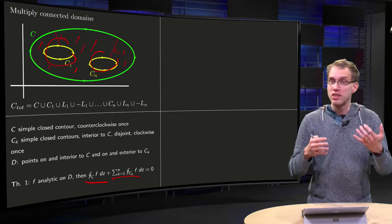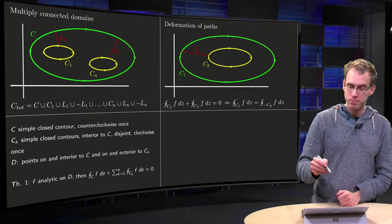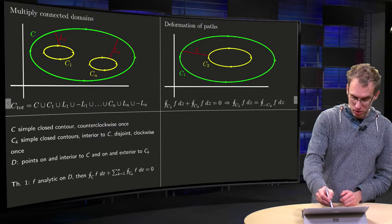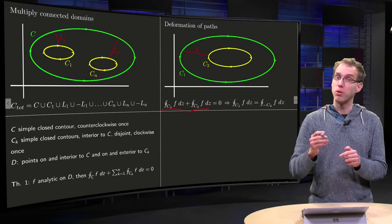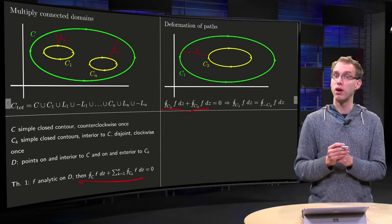So how does this help us? Well, if you have for example a domain with one hole, like we have over here, then you know that the integral along c1, going counterclockwise, plus the integral along c2, going clockwise, equals zero. That is the straightforward application of this formula over here.